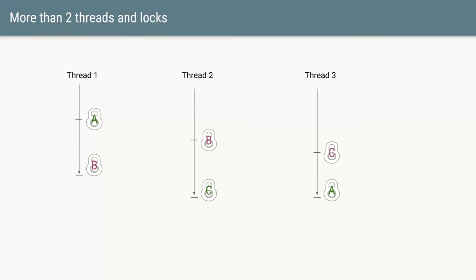The third factor is that a deadlock need not involve just two threads and two locks. There could be multiple threads and multiple locks — for example, Thread 1 holds Lock A and waits for Lock B, Thread 2 holds Lock B and waits for Lock C, and Thread 3 holds Lock C but waits for Lock A. This circular dependency across multiple threads and lock types is very difficult to detect just by reading the code.